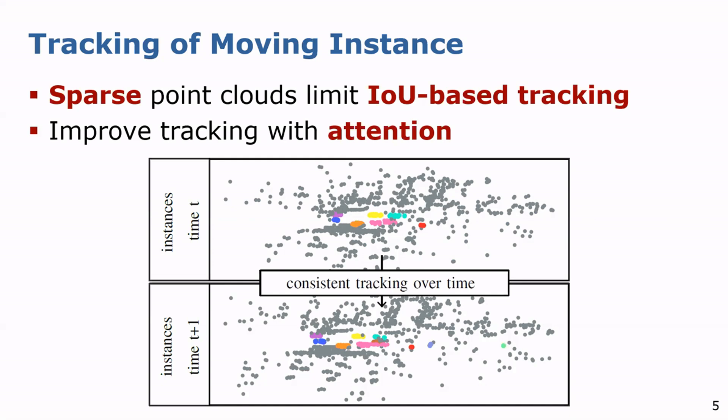This is disadvantageous for tasks which rely on low latencies, such as collision avoidance. The sparse measurements make commonly used IOU-based tracking difficult, since complete instances can comprise just a single detection and therefore no overlap exists.